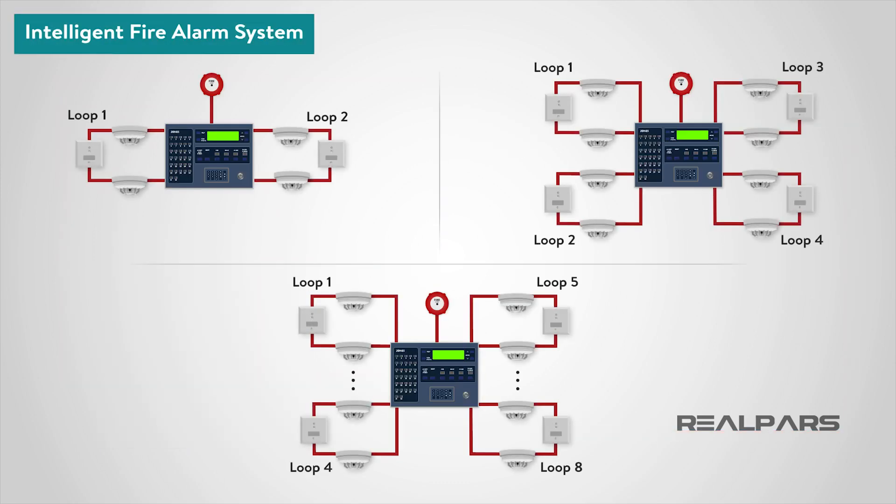Intelligent fire alarm systems are available in two, four, and eight loop versions, which means large premises can be monitored from one single panel.